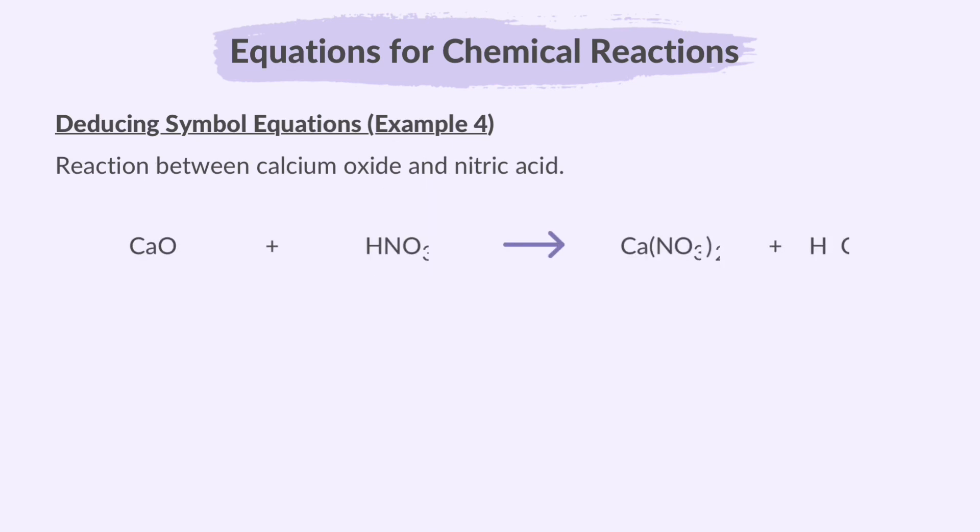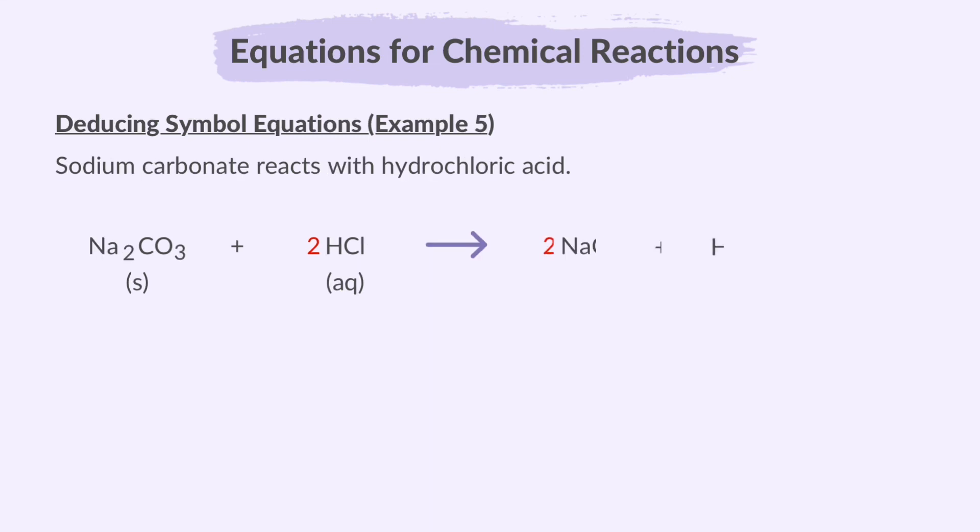In this example, calcium oxide reacts with nitric acid to produce calcium nitrate and water. Notice how the NO3 is enclosed in brackets, showing that the 2 belongs to the whole nitrate ion. To balance this equation, we simply add a 2 in front of the HNO3 on the left side. In the next equation, there are 3 products.